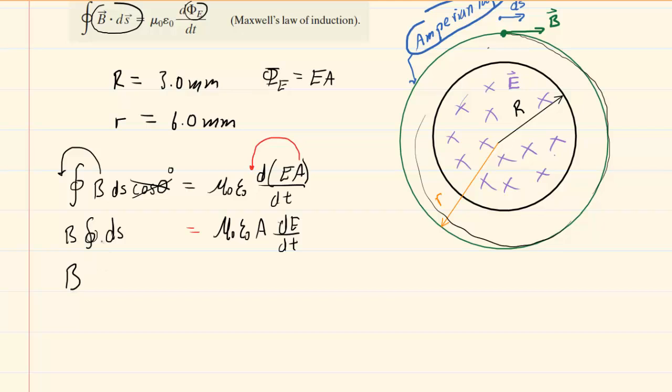The complete length around our Amperian loop would just be the circumference of that circle. So we're going to rewrite the integral dS as the circumference around our Amperian loop. That would be two pi multiplied by the radius of our Amperian loop.